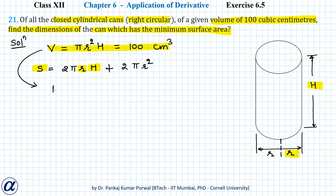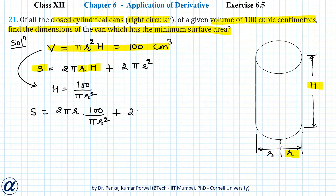From the volume equation, h equals 100 upon πr². Substituting this into the surface area equation gives 2πr × (100 / πr²) + 2πr². Here π cancels π and r cancels r² once, so we are left with a simplified expression.